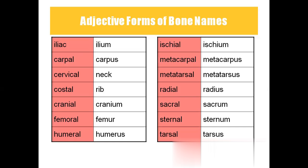Ischial means ischium, which is a part of the pelvic bone. Metacarpal means metacarpus — metacarpal means palm bones. Metatarsal means foot bones. Radius is the forearm bone. Sacral is sacrum. Sternal is sternum, which means breastplate. Tarsal is tarsus, which is the ankle bones.